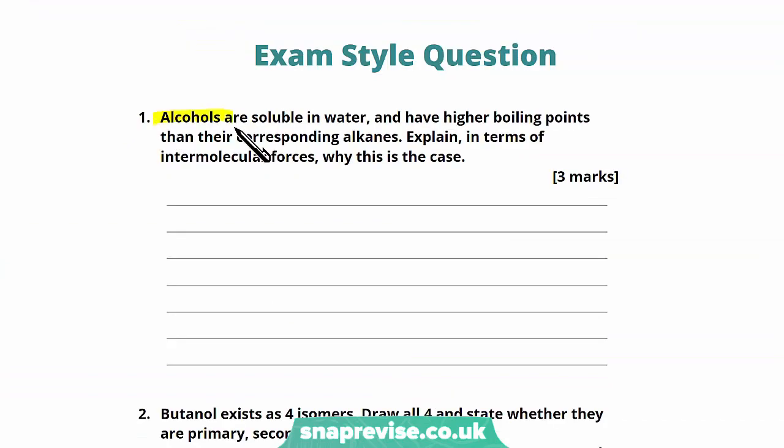Exam question: Alcohols are soluble in water and have higher boiling points than their corresponding alkanes. Explain in terms of intermolecular forces why this is the case. We know that it's primarily due to the fact that alcohols are able to hydrogen bond to water molecules or to other molecules of alcohol, whereas alkanes only interact with van der Waals forces of attraction. We know that these hydrogen bonds are much stronger than van der Waals forces, and the hydrogen bonds that alcohol is able to form with water explains its solubility. The intermolecular hydrogen bonds explain its higher boiling point compared to alkanes.